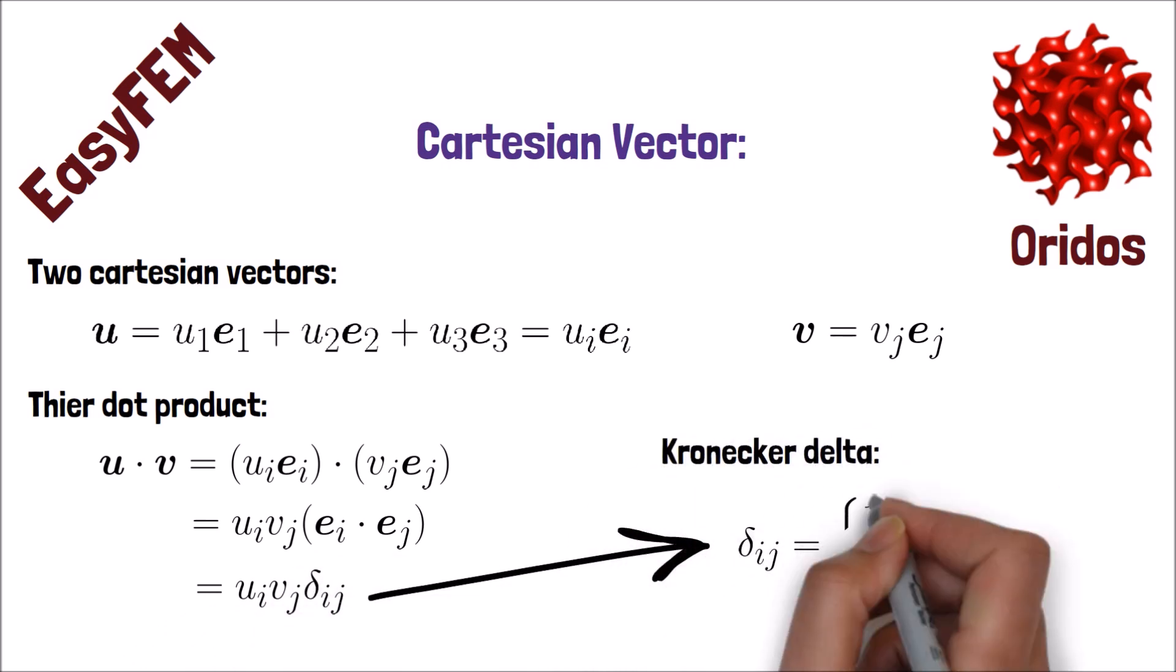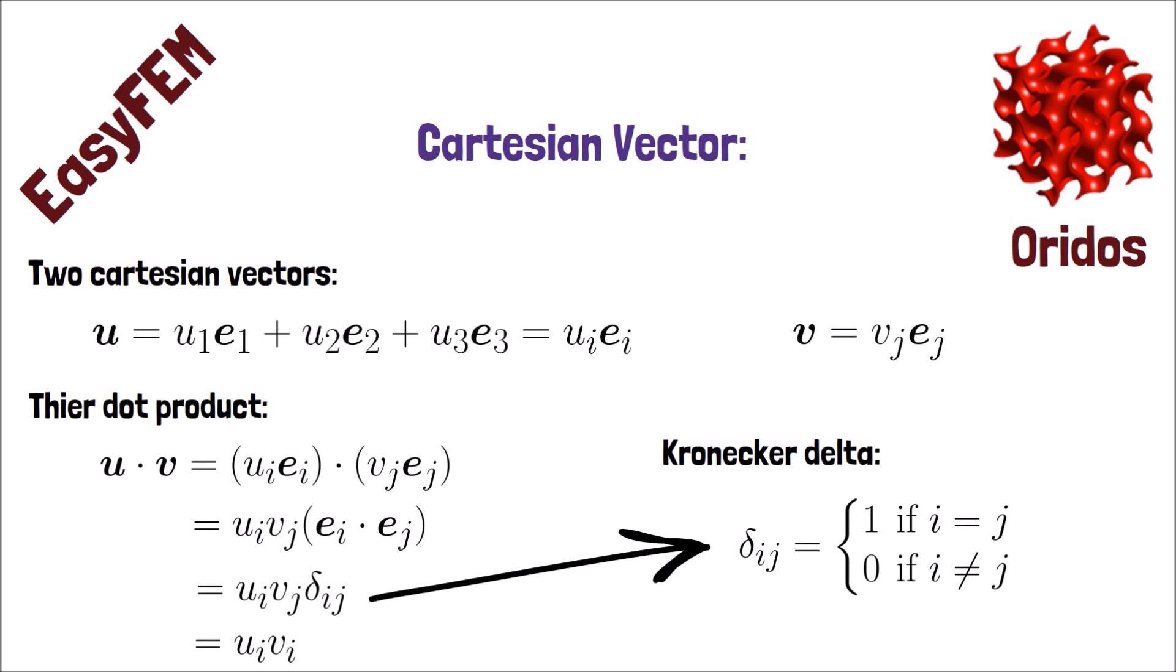We can define the dot product of two basis vectors with the Kronecker Delta function. The Kronecker Delta is equal to 1 if I equals J, otherwise it's 0. Therefore, the dot product of U dot V is a scalar, and it will be UIVI where we can perform Einstein Summation to get the scalar value.